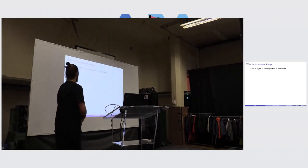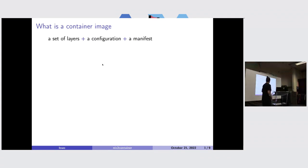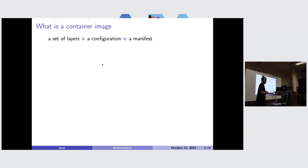First of all, what is a container image? The goal here is just to provide a brief overview and not go into all details. A container image is basically composed of three types of artifacts: layers, a configuration file, and a manifest file.